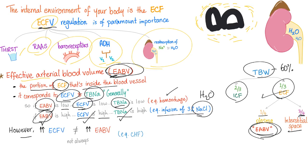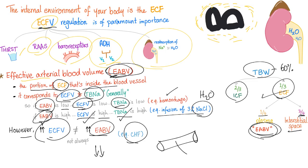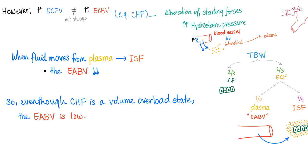However, there is an exception to every rule. Just because the extracellular fluid volume is high does not necessarily mean that the effective arterial blood volume is high. Remember CHF — congestive heart failure. It's a volume overload state, yet the effective arterial blood volume is low. Why? Because blood or fluid is escaping from your plasma compartment to the interstitial space, causing pitting edema, leaving less effective arterial blood volume in the vessel. You have alteration of Starling forces, increased hydrostatic pressure in the vessel, moving fluid outside to the interstitial space.